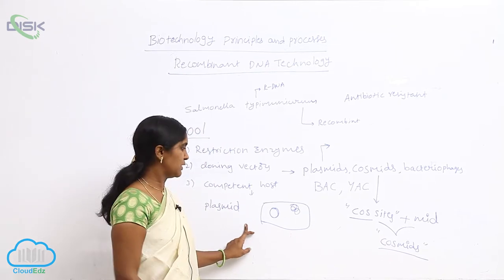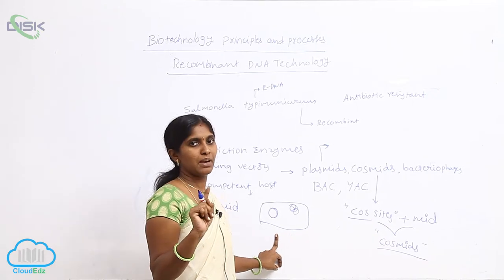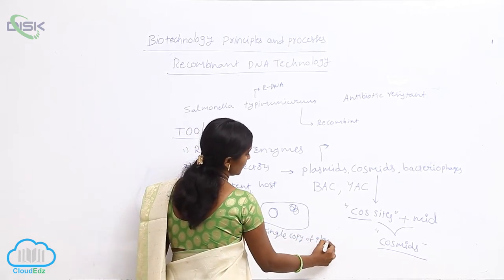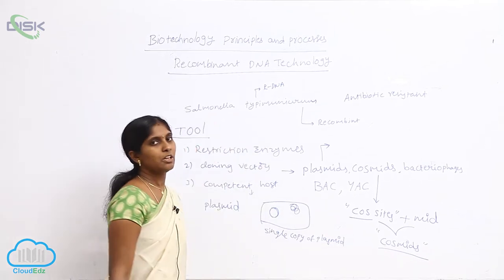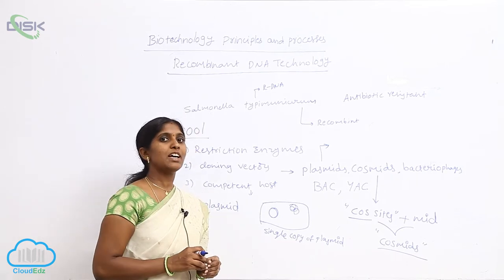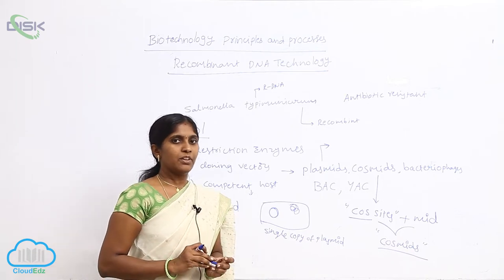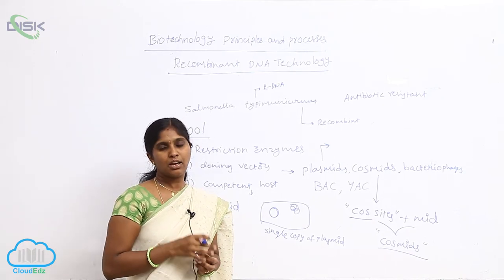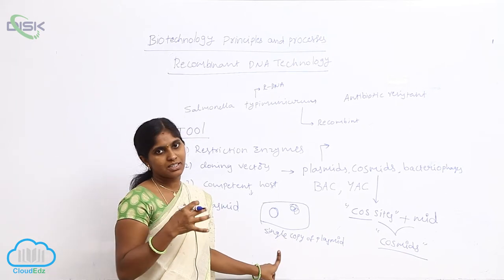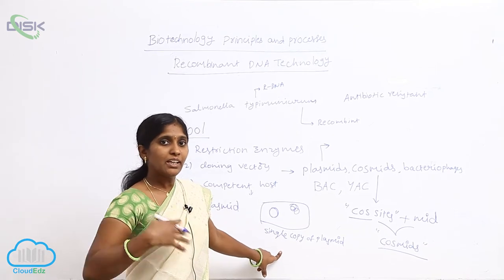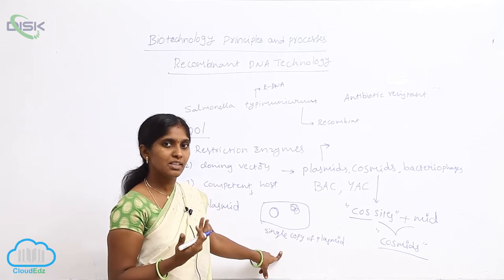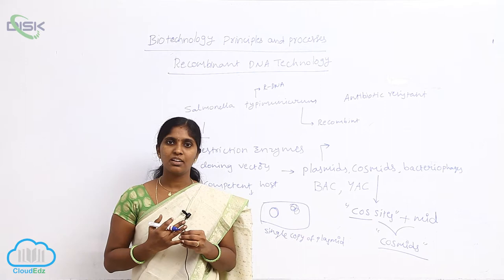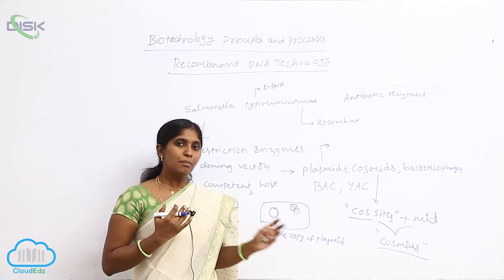Single copy number plasmids means within a single bacterium, only one plasmid is present. The plasmid number also changes according to conditions. In adverse conditions, the number of plasmids increases. For example, when a disease is caused by Salmonella and antibiotics are applied, the bacteria undergo antibiotic stress, and they enhance resistance by increasing the number of plasmids. Adverse conditions such as antibiotic stress, high temperature, or high metallic stress cause the number of plasmids to increase.